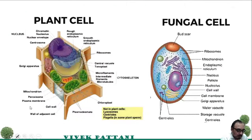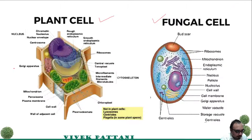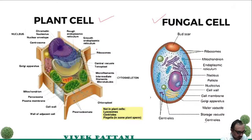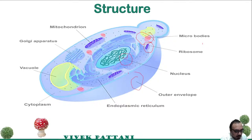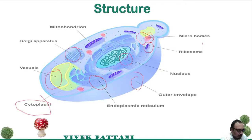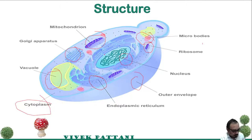But it is not similar to the plant cell. You can see the difference here between the plant cell and the fungal cell. The plant cell contains more apparatus because it contains various machinery required for photosynthesis. Now the basic structure of a fungus contains micro bodies, ribosomes, and nuclei in which DNA is present in an outer envelope, endoplasmic reticulum, cytoplasm, Golgi apparatus, and mitochondria.